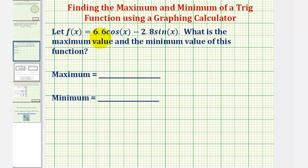We're given the trig function f of x equals 6.6 cosine x minus 2.8 sine x and we're asked to find the maximum value and minimum value of the function.